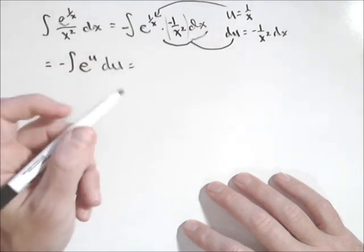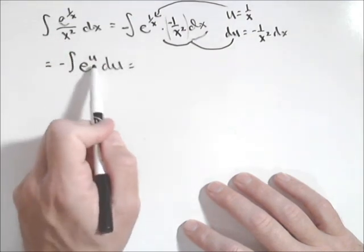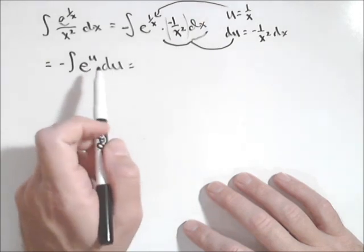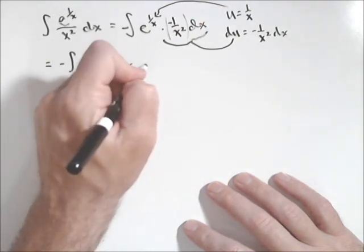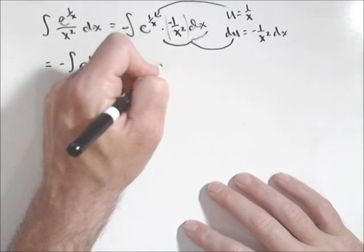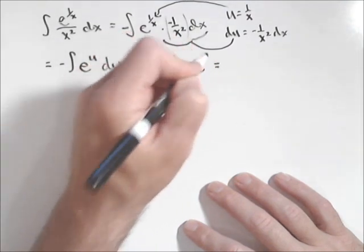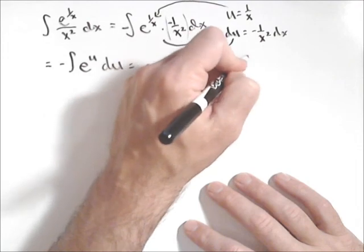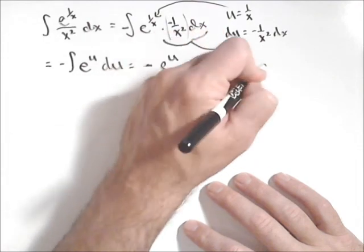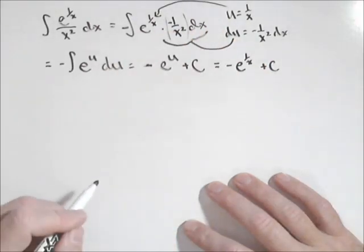And we get what was fairly complex looking is actually probably our easiest antiderivative we have, e to the u, whose antiderivative is e to the u. Now we have a negative out front, so it's negative e to the u plus C, and then we sub back. We have negative e to the one over x plus C, and we're done.